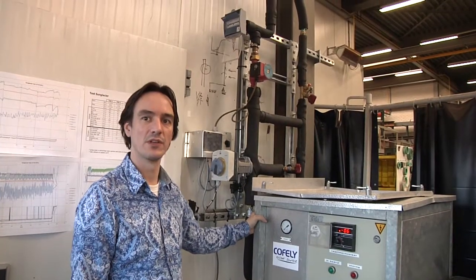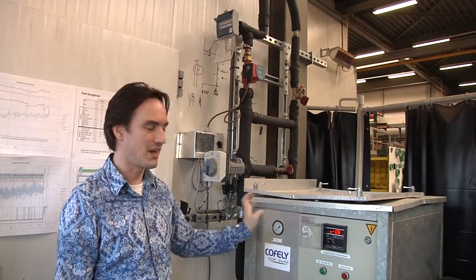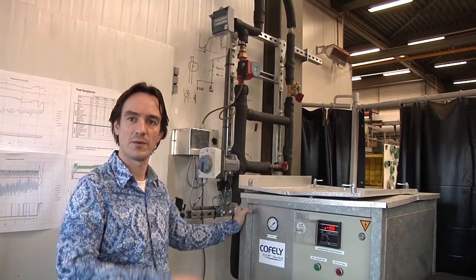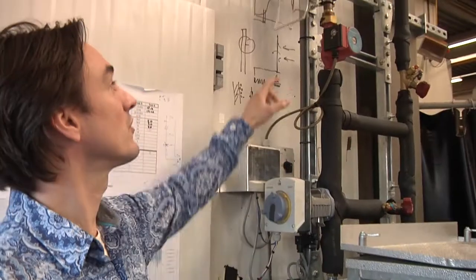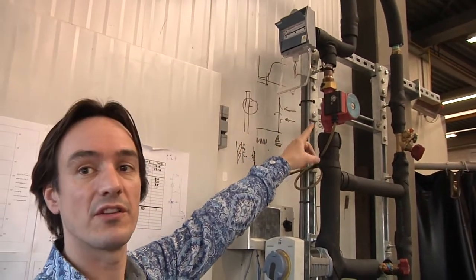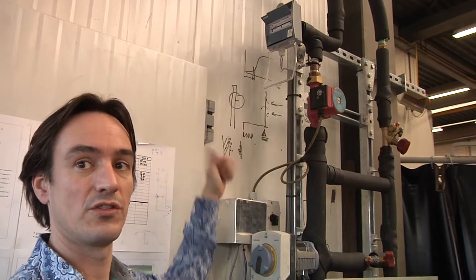This cooling machine cools the glycol down to minus 10 to minus 5, around that region. On top there, you see a pump which circulates the cold glycol to the second heat exchanger.